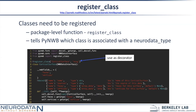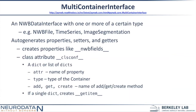Finally, for PyNWB to know that this class corresponds to the neurodata type CorticalSurface, we have to register it with the API. That's where the pynwb.register_class decorator comes in — so when it reads a neurodata type called CorticalSurface, it knows to use this CorticalSurface object to represent that data.